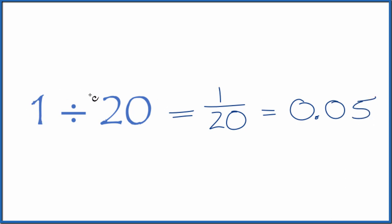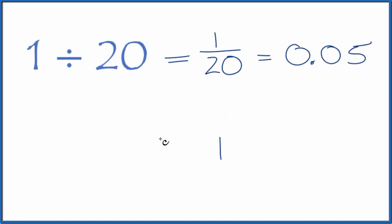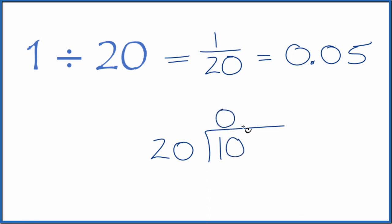So when we divide 1 by 20, we get the fraction 1 20th, or the decimal 0.05. You could also do this longhand. You could take 1 and see how many times 20 goes into 1. 20 doesn't go into 1, so let's make this 10, put a 0 with a decimal point. 20 still doesn't go into 10, so let's make it 100, put another 0.